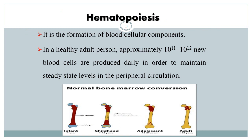What is hematopoiesis? Hematopoiesis is the formation of blood cellular components. Normally, bone marrow is responsible for the formation of new blood cells. In healthy adult persons, bone marrow is able to produce new blood cells in order to maintain steady state levels of cells in peripheral circulation.